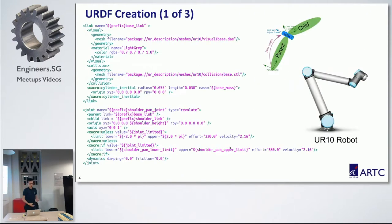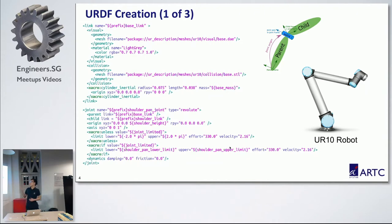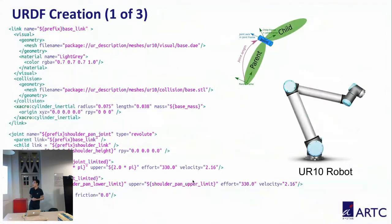First of all, using ROS, we need to create the URDF — Universal Robot Description Format. This is the UR10 URDF. It is in XML format. This sample shows you the shoulder pan joint: its parent link is the base link and its child link is the shoulder link, which includes visual features, inertia, and other information.